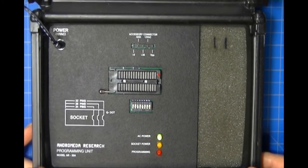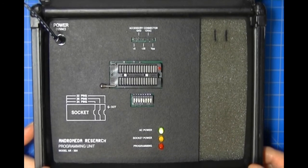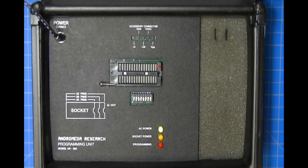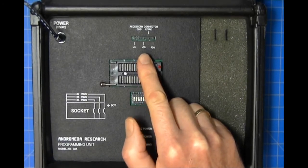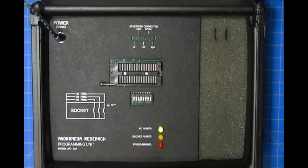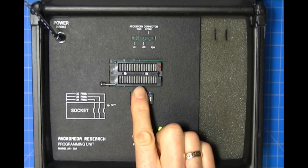Now I want to point out a feature of the programming unit, and that is right here we have what's called the accessory connector. The accessory connector allows the Promplus system to do things that other products don't do simply because we provide external voltages and signals that don't necessarily come from the socket on the programming unit.